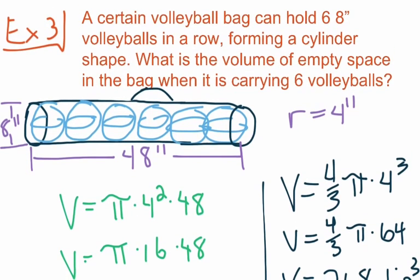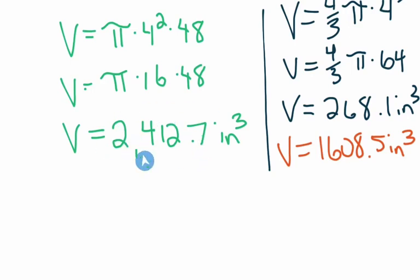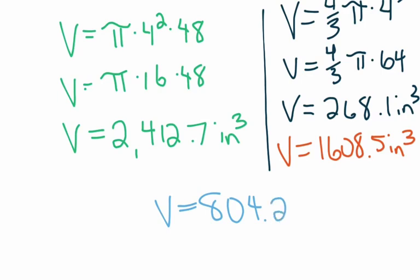We're told to find the volume of empty space in the bag. The volume of the bag is about 2,412.7 cubic inches and the volume of the six volleyballs is about 1,608.5 cubic inches. We subtract to find the volume of empty space, giving us a total volume of empty space equal to 804.2 cubic inches. There's quite a bit of empty space — 804.2 cubic inches after loading six volleyballs into that bag.